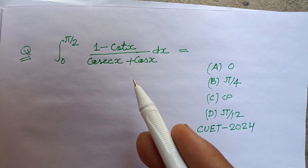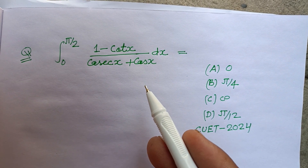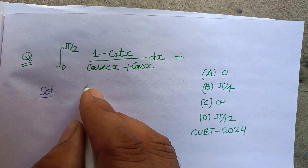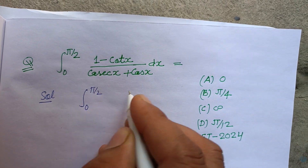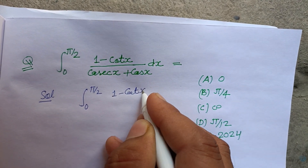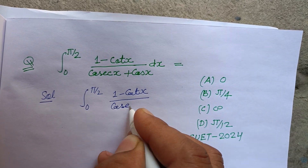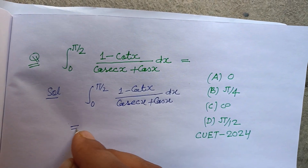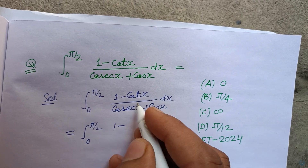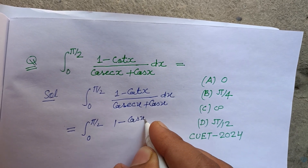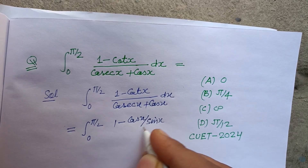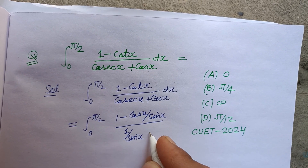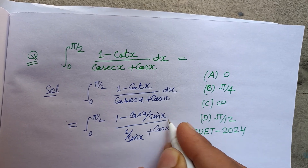The integral from 0 to π/2 of (1 - cot x) / (cos x + cos x) dx. Now changing cot x as cos x over sin x, the expression becomes 1 over sin x plus cos x dx.